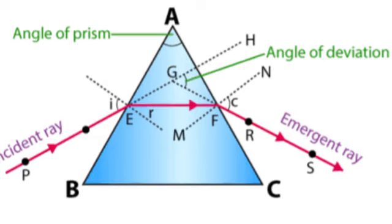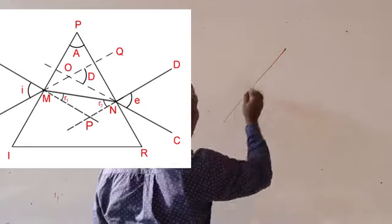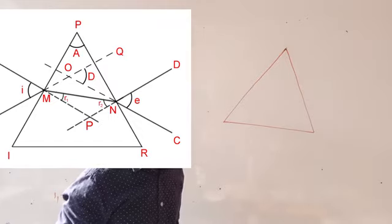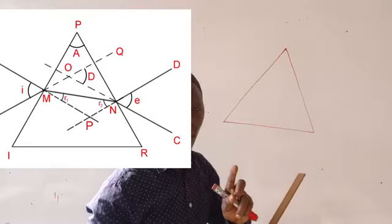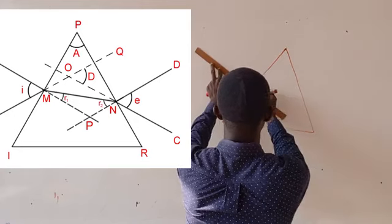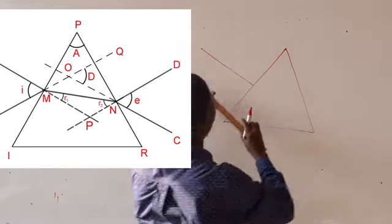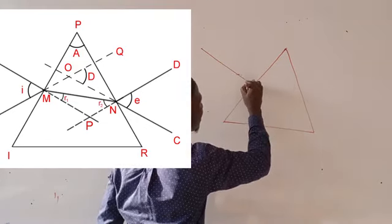This is a triangular prism. Let's start from the ray diagram and see how a ray of light passes through a triangular prism. When you have your triangular prism, you allow a ray of light to be incident on one side of the triangular faces. First, you have to draw your normal to the surface — that is the line that makes a 90-degree angle to the surface.